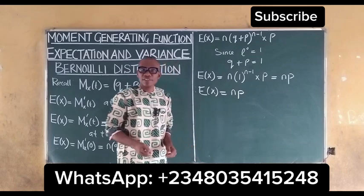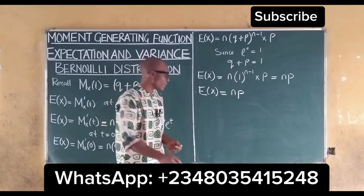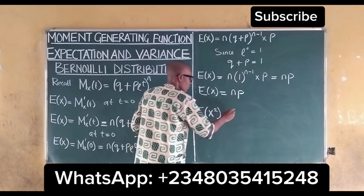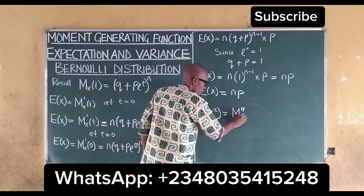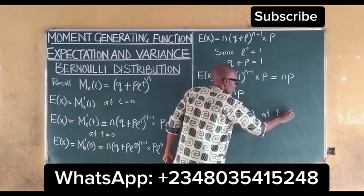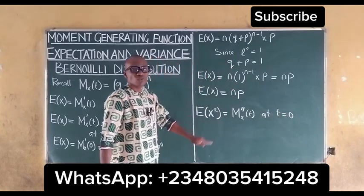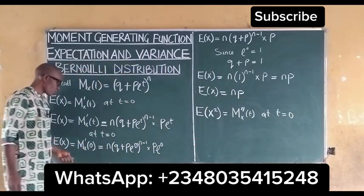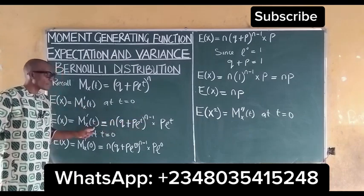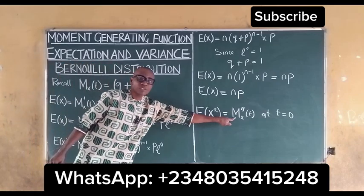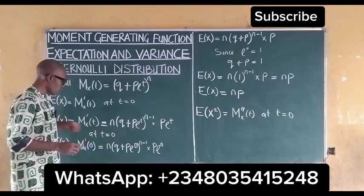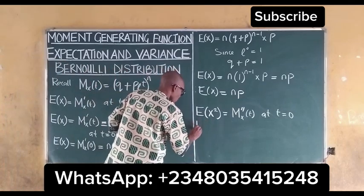The next thing to find is the expectation of x squared. The expectation of x squared is equal to the second derivative of the moment generating function at t equal to zero. To find the second derivative, we have to differentiate the first derivative function, so we first write it out.